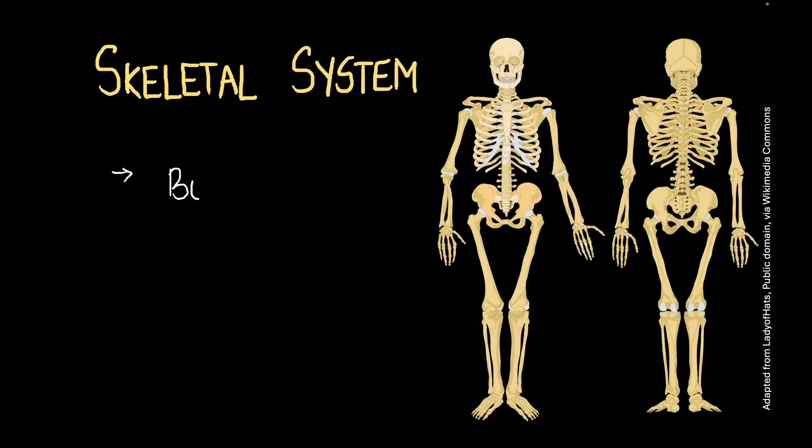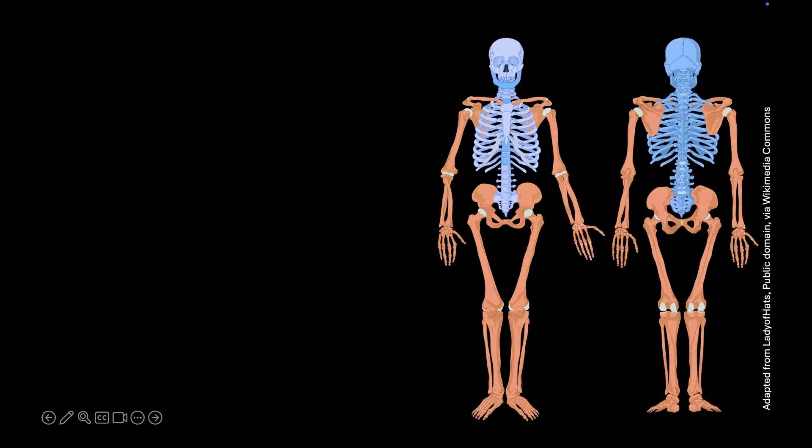The skeletal system is primarily made up of bones. In this video we will discuss one way of classifying bones and the functions of some of the important bones of the human body. All the bones in the human body are divided into two categories.